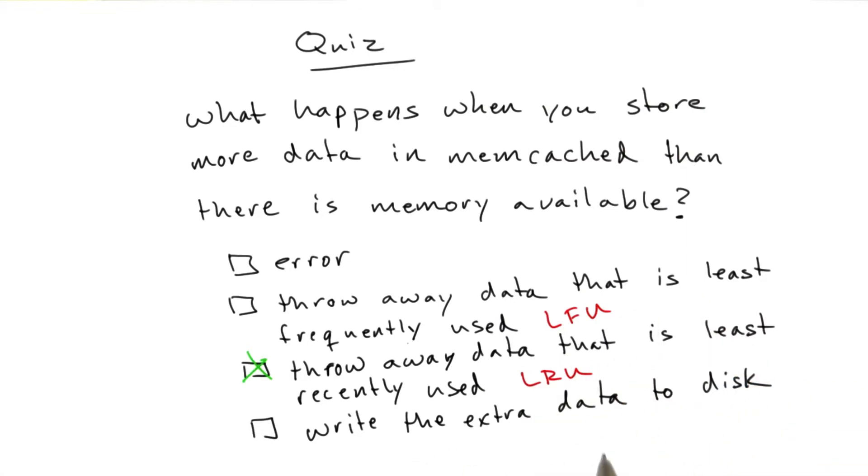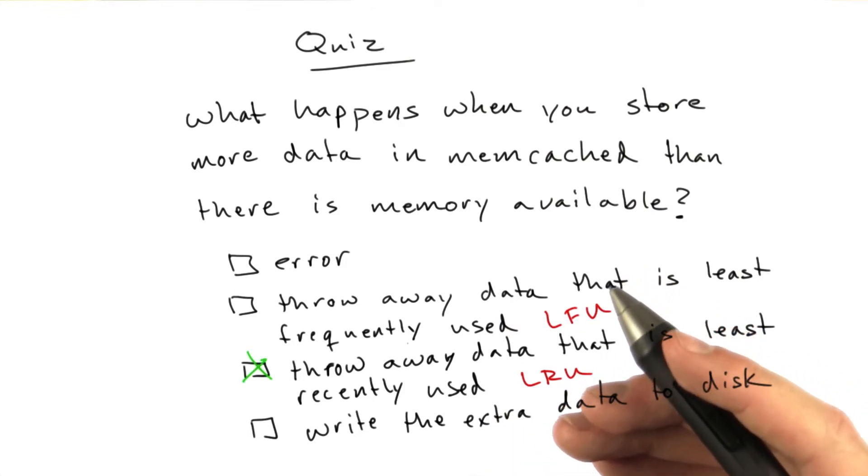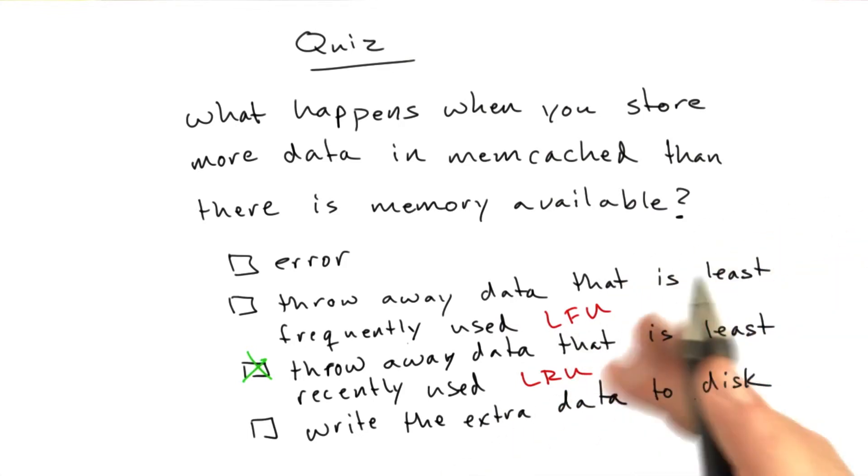And the final answer, write the extra data to disk. As we said, Memcached is entirely in memory. There are variations of Memcached that write extra data to disk. But writing to disk means it's a performance trade-off. Writing to disk is slow. Reading from disk is slow. If you want to be writing data to disk, Memcached probably isn't the right solution for you.